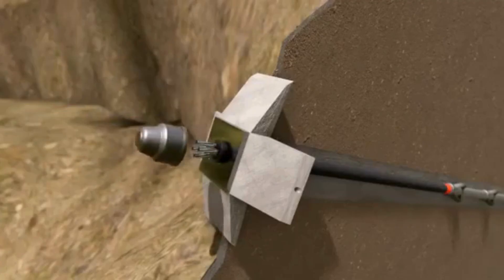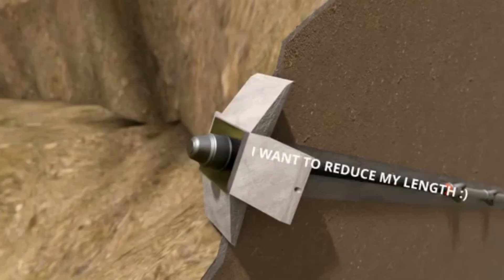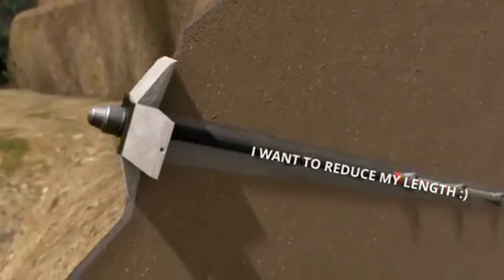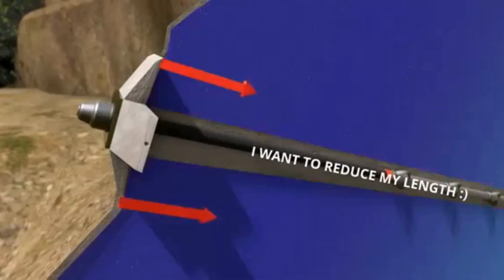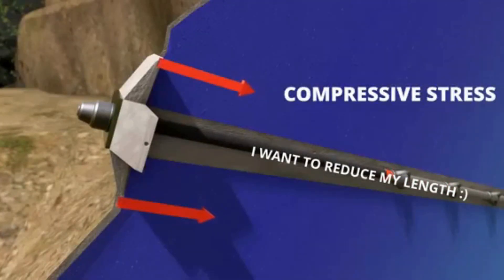Now, can you predict the force produced by the concrete block? The steel tendon in tension wants to reduce its length, but the block is not allowing that. This means the concrete block will press the slope inward. This compressive force will greatly increase the stability of the slope.